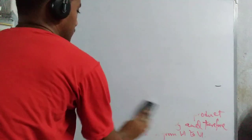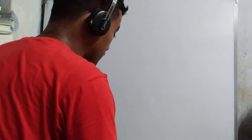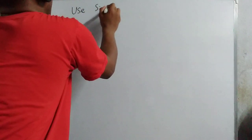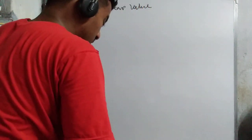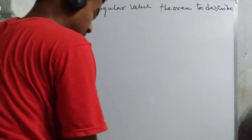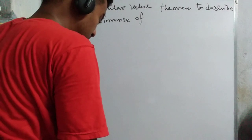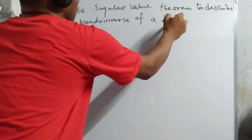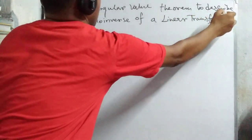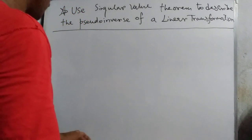We can use the singular value theorem to describe the pseudo inverse of a linear transformation. We will use the singular values to express T† explicitly.